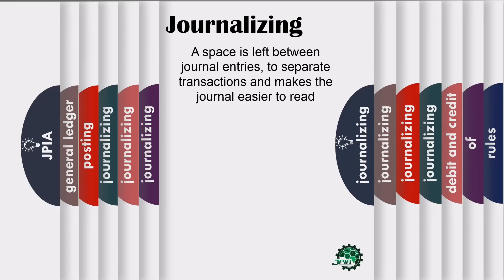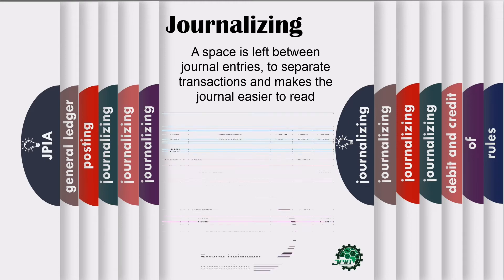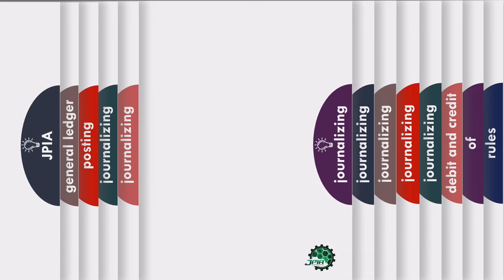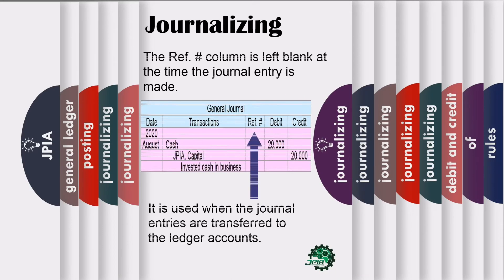A space is left between journal entries to separate transactions and make the journal easier to read. Since the journal contains all the original entries, this is your basis of inputs to the following steps, so it is better when it's neat and easy to read. The reference number column is left blank at the time the journal entry is made. It is used when journal entries are transferred to the ledger accounts. The third step in the accounting cycle is posting to the ledger, and that is the only time you can write under this column.